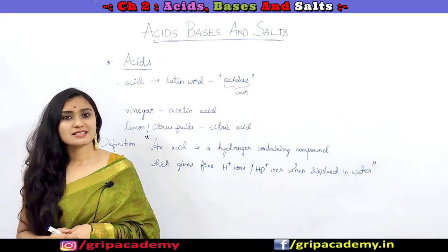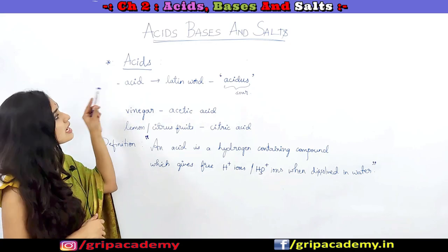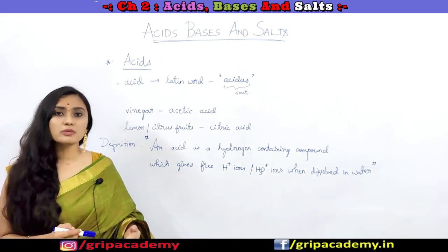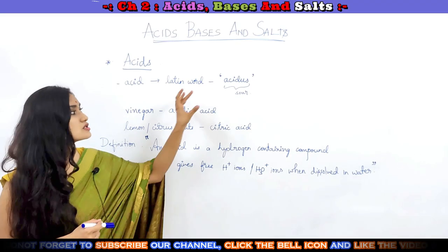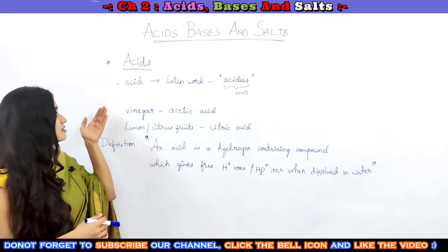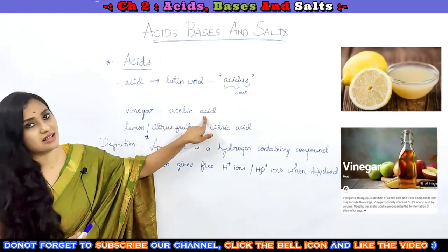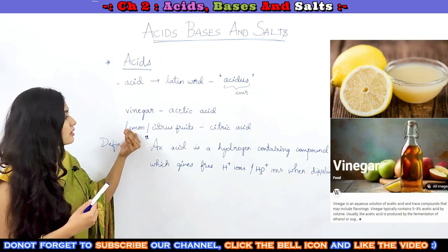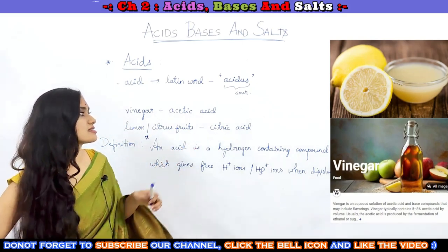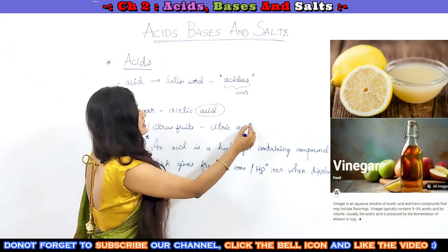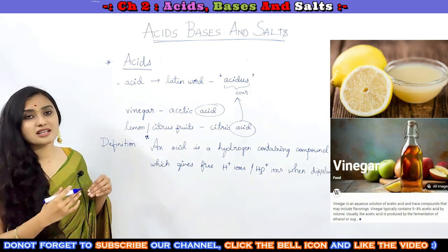Let us discuss more about acids: what their characteristics are, what exactly acid means, and about bases. Now let us discuss about acids in detail. The word 'acid' has been derived from a Latin word called 'acidus,' which means a souring taste. That's the reason the sour taste of vinegar is because of the presence of acetic acid, and the sour taste of lemon and most citrus fruits is because of the presence of citric acid. So acid basically has a souring taste.